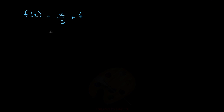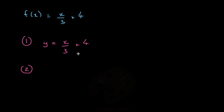But what if we have a harder example, like this one? We can't use the number machine like we did last time, so we're going to have to use a method. For the first step, we have to replace f(x) with y — that's just for convenience. So y is equal to x over 3 plus 4. Next, we have to get this equation in terms of x instead of y, because instead of finding the output, we now want to find the input, which is x. So let's subtract 4 from both sides: y minus 4 is equal to x over 3. Then let's multiply both sides by 3, so we get x is equal to 3 times (y minus 4).